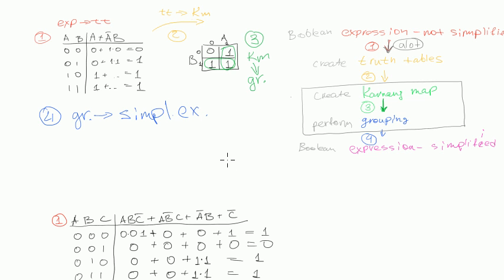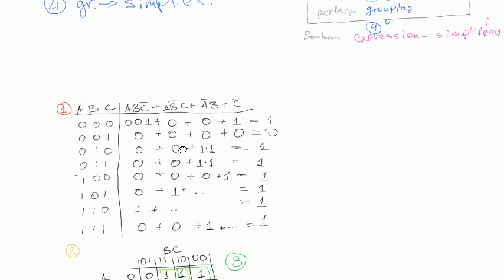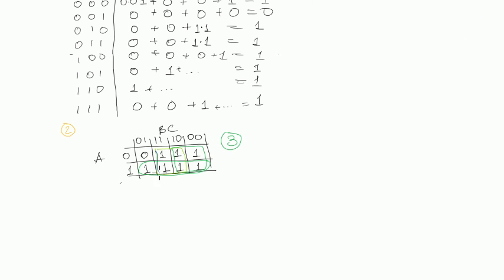The result of this expression will consist of terms, and we will have one term for each group. For example, here we have two groups — this one and this one — so the result will be some kind of term x plus term y. In this case we have three groups, so the result will be some kind of x plus y plus z.